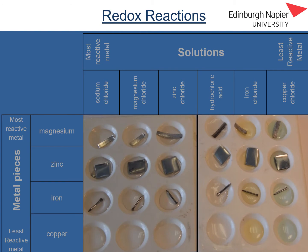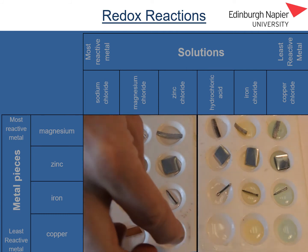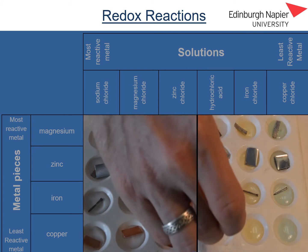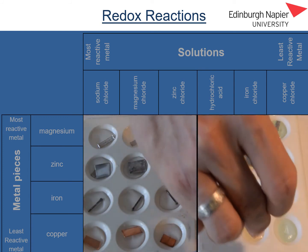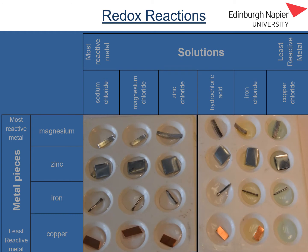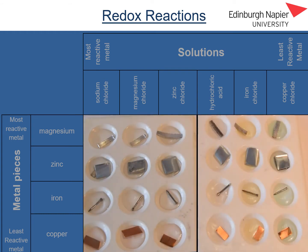In the final row I'm going to add some pieces of copper metal. A piece of copper in the sodium chloride solution, then copper in the magnesium chloride solution, in the zinc chloride solution, in the hydrochloric acid solution, in the iron chloride solution, and finally in the copper chloride solution.